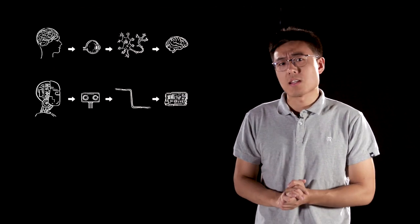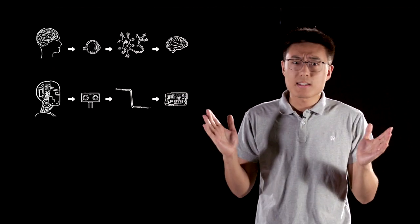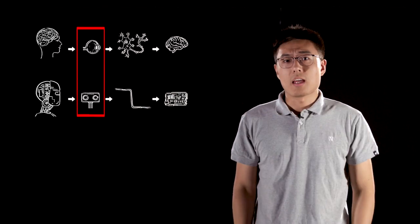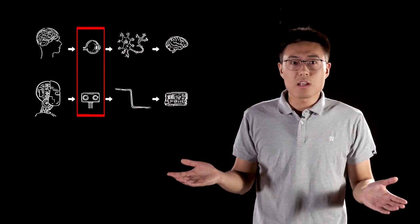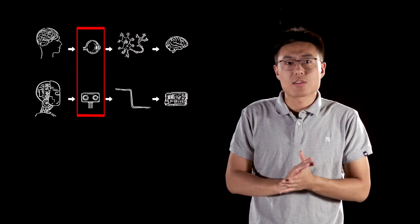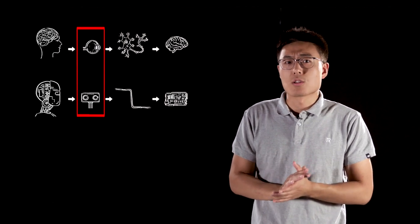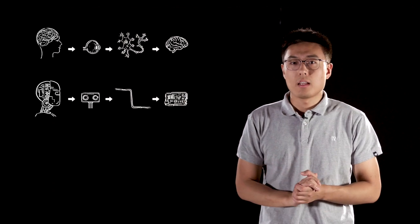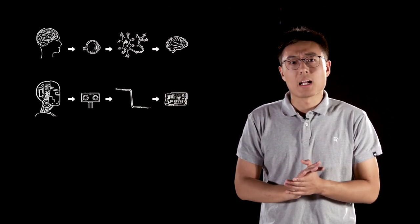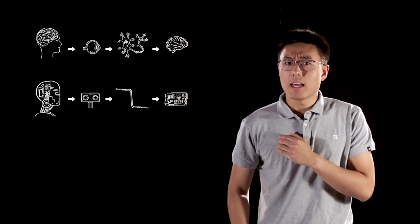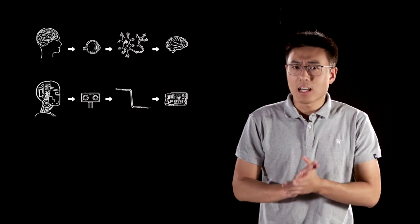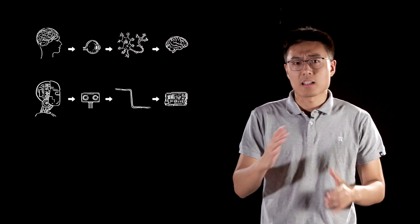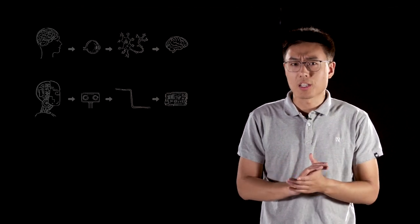Sensors are like the human sensory organs. We sense the outside world through our eyes, nose, ears, and skin. Sensors on a robot can sense environmental changes and transmit information to its controller. Actuators are like the limbs of the human body — we can't move without our arms and legs, and it's the same for robots. They cannot perform any action without their actuators, like motors, the devices that convert energy into mechanical work.